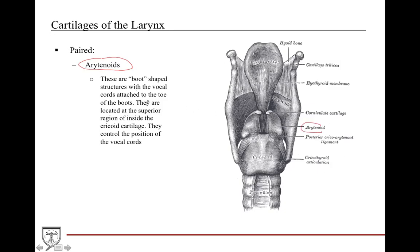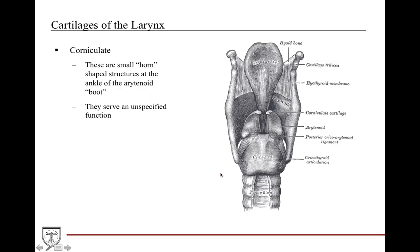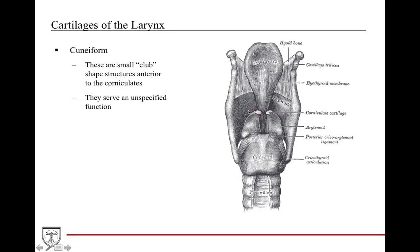The paired cartilages include the arytenoids, which are boot-shaped structures that attach the true vocal cords and are located in the superior region inside the cricoid cartilage, allowing for movement of the vocal folds. Then you have the corniculate cartilages — small horn-shaped structures at the ankle of the boot — which serve an unspecified function. And then you have the cuneiform cartilages, which are small club-shaped structures anterior to the corniculate, also with a relatively unspecified function.